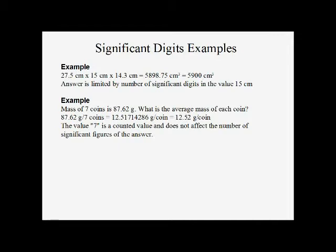More examples: multiplying the three sides of a rectangular box together — 27.5, 15, and 14.3. Our calculator gives us 5,898.75 cubic centimeters. We have three, two, and three significant digits, so our answer is limited to two significant digits, the smallest. The third digit is 9, so we add one to the second digit — 58 turns into 59. We need two zeros to keep the magnitude the same, giving us 5,900 cubic centimeters.